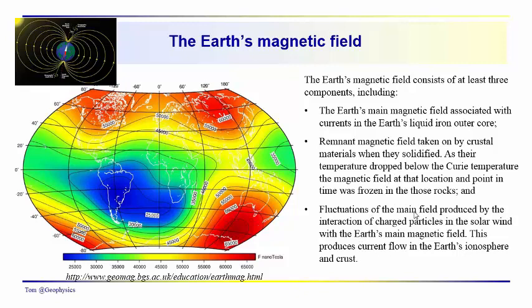There are also fluctuations in the main field that you're looking at when conducting a magnetic survey, associated with the solar wind, which is hurling electrons, protons, and charged particles at the Earth. They're caught up in the Earth's magnetic field and stir up currents in the Earth's ionosphere — and also in the crust — which produce a secondary induced electromagnetic field that you will also see when you are collecting data. We'll come back and talk about that as well.